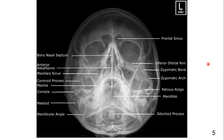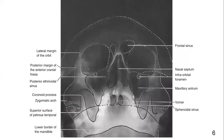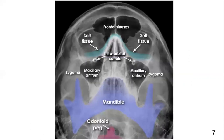Here you can see the resultant radiograph. You can pause this video and see the different structures visible on this radiograph. Here is another magnification, and you can see the different structures in the mid-face area. Here is another diagram — again, pause and try to identify each structure.